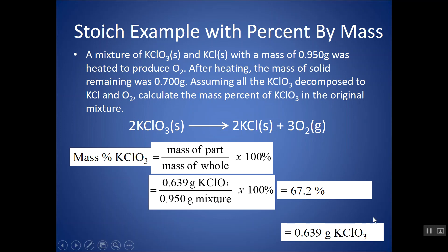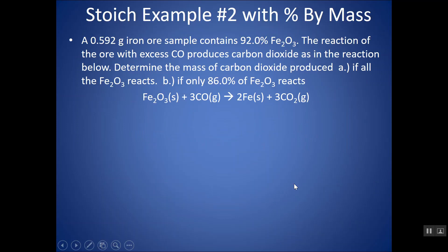Keeping around three significant figures. Here's another example. In this case, rather than finding percent by mass at the end, I give percent by mass at the beginning. There's an iron ore sample — a lot of times these ores are mixtures, so it doesn't contain just Fe2O3, it contains other things. The ore contains 92.0% Fe2O3, and it reacts with excess CO to produce carbon dioxide and iron in the reaction below. I want to know how much carbon dioxide is produced if all the Fe2O3 reacts.